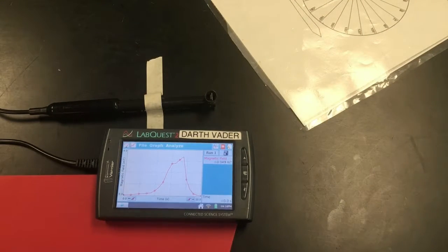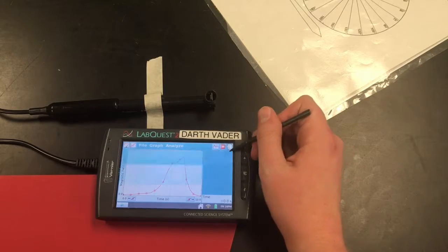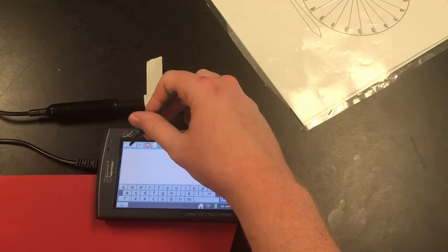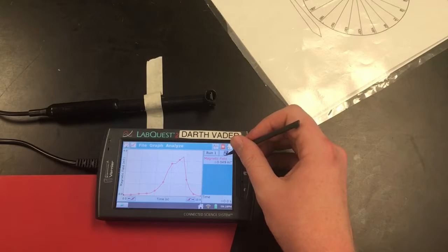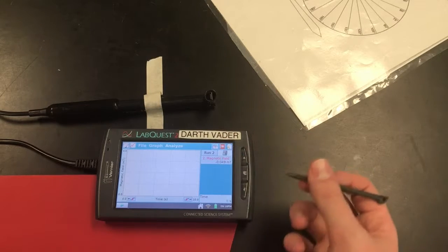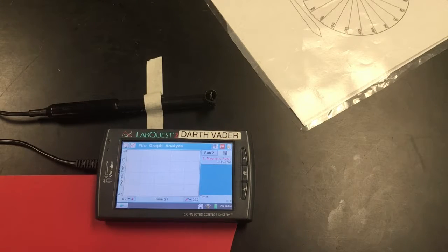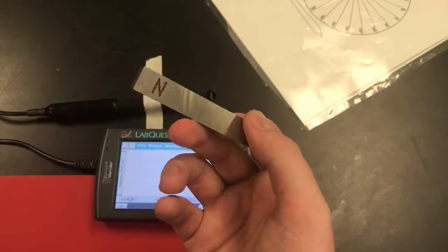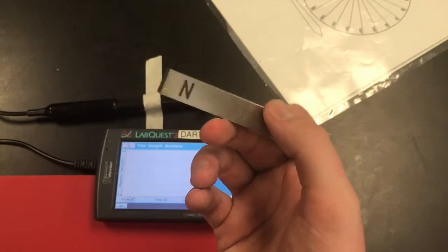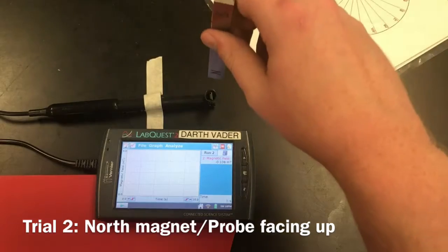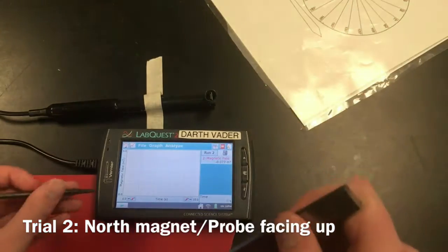Same idea for this next experiment. I'm going to hit the filing cabinet. We'll start a run two. This time we're going to do the same thing but with the north end of the magnet. North end of the magnet down and then back up. So I'll hit play.